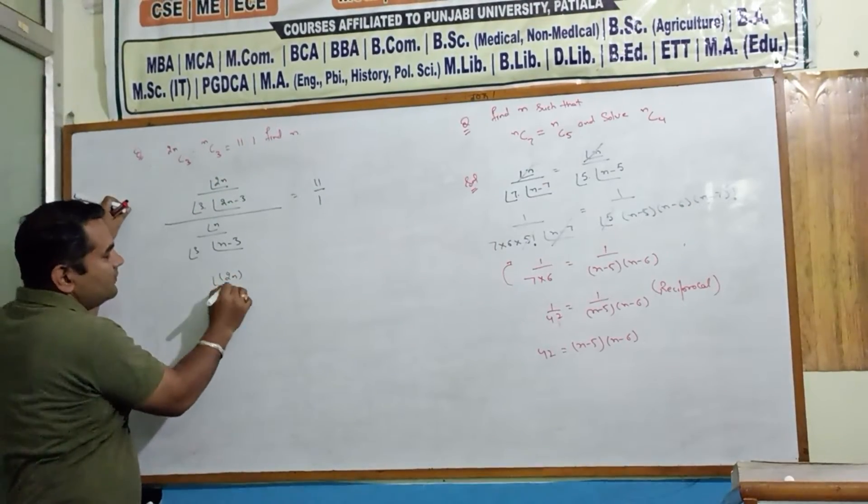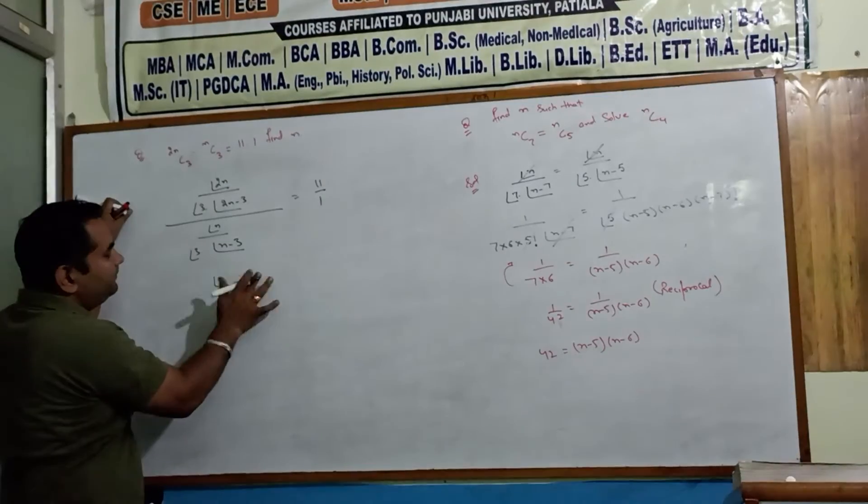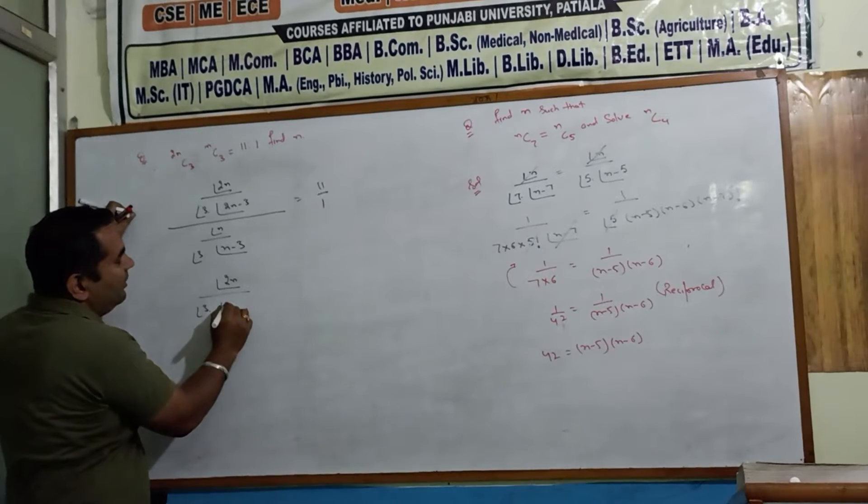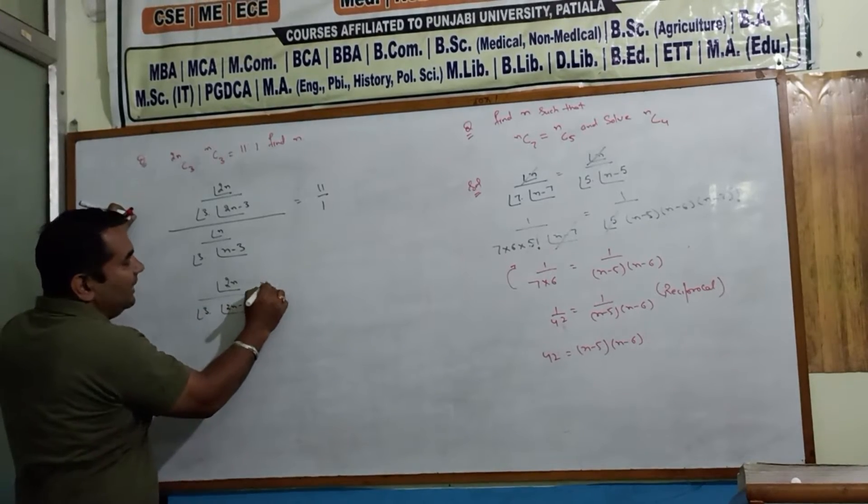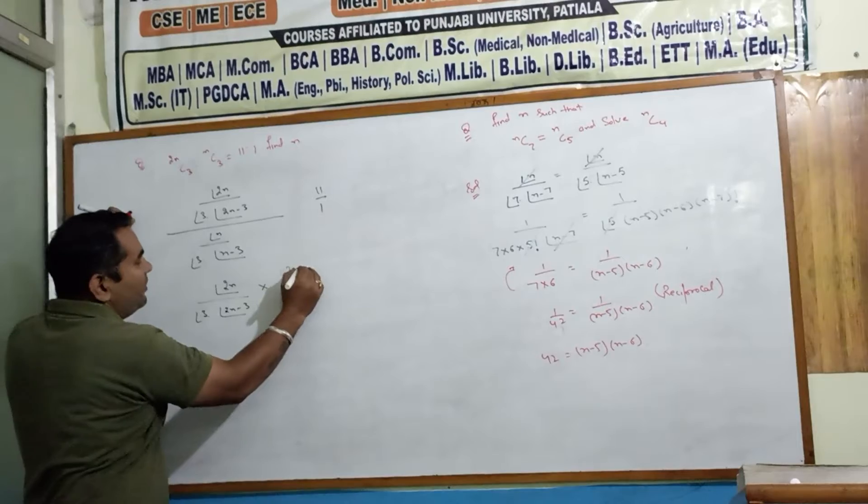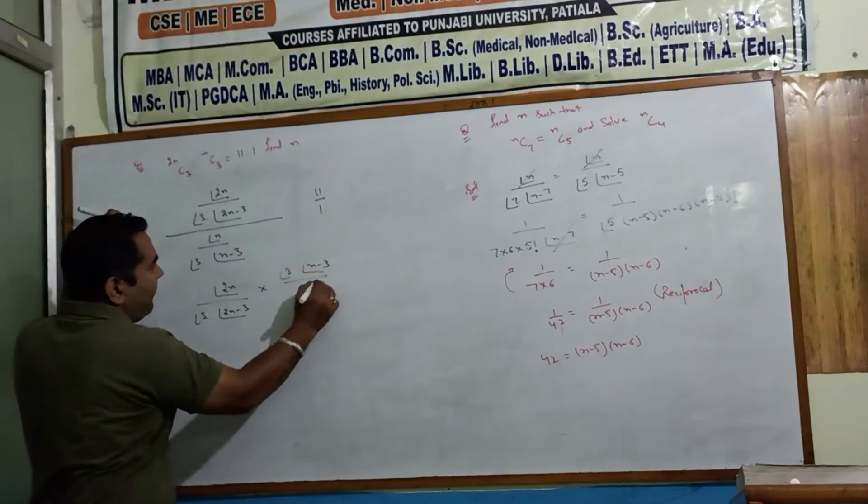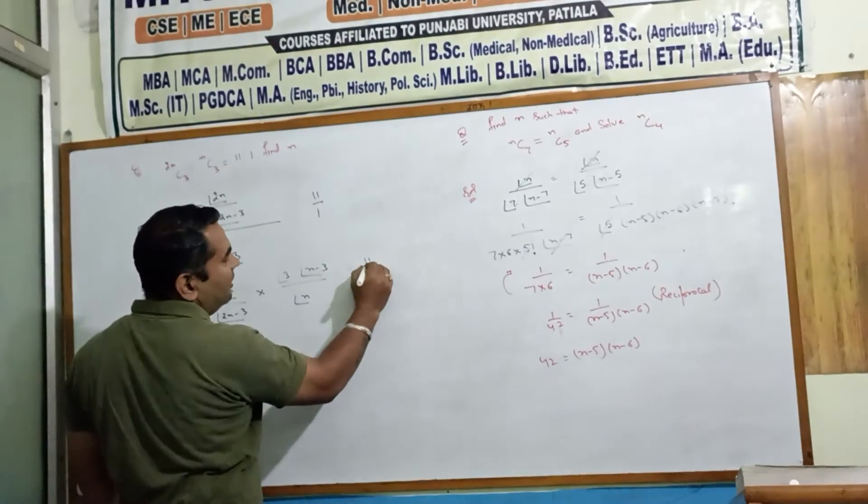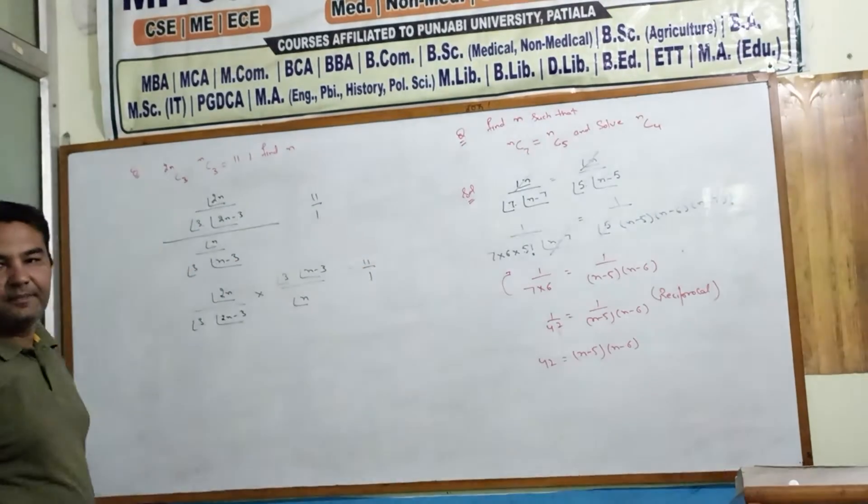2N factorial over 3 factorial times 2N minus 3. Multiply denominator: N factorial. Clear. Equals to 11 by 1. Next,